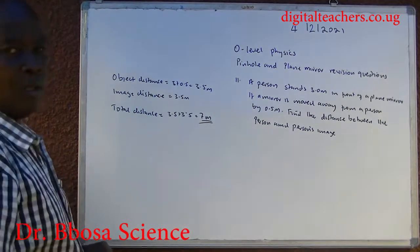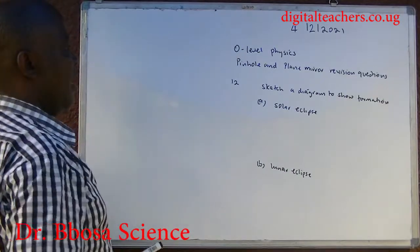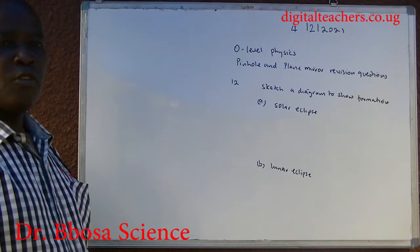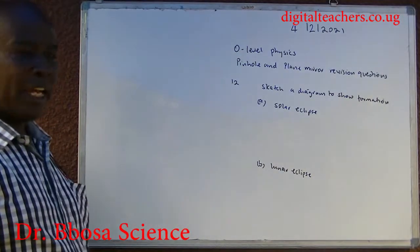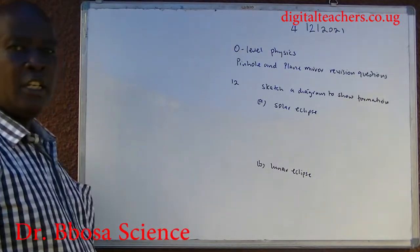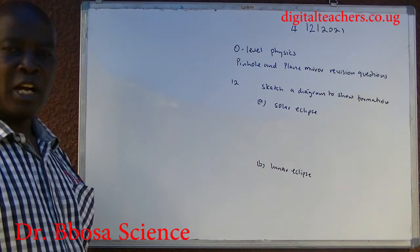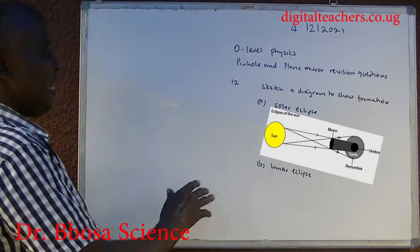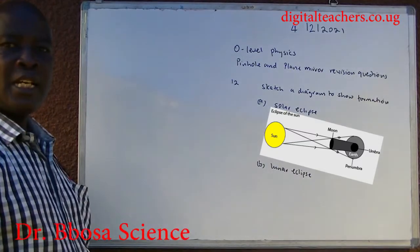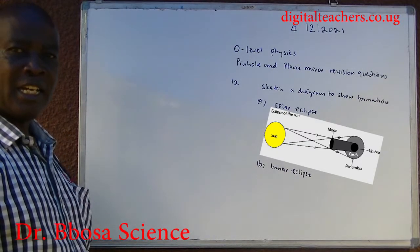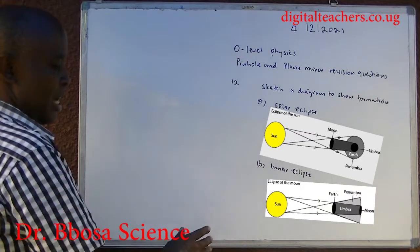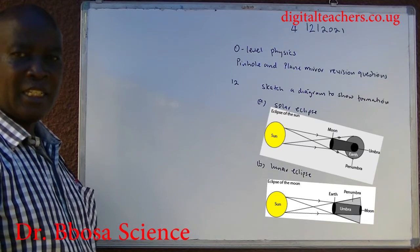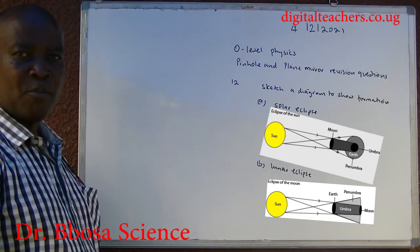Number twelve: sketch a diagram to show the formation of A, a solar eclipse, and B, a lunar eclipse. You can pause and answer. In a solar eclipse, the moon is between the sun and the earth. In a lunar eclipse, the earth is between the sun and the moon.